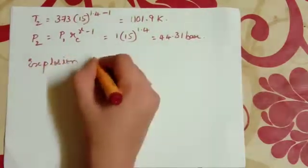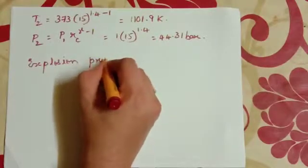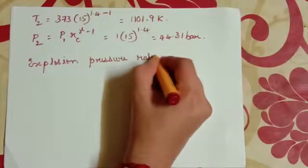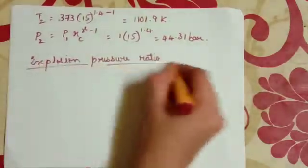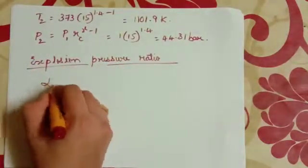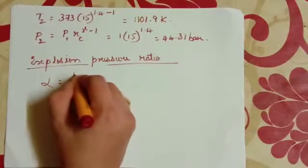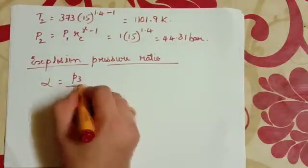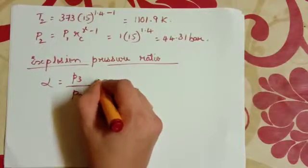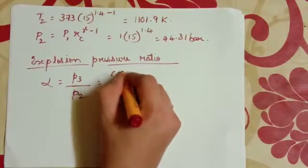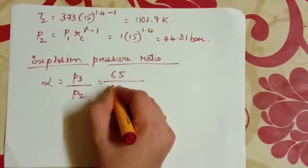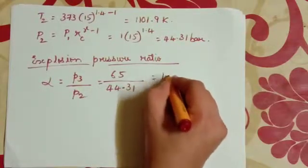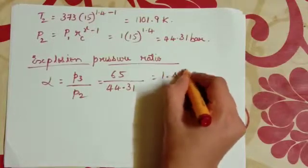Then, explosion pressure ratio alpha is equal to P3 by P2. That is equal to 65 divided by 44.31, that is 1.466.